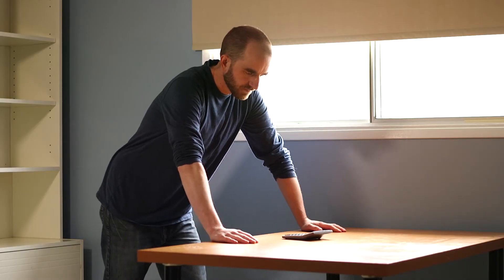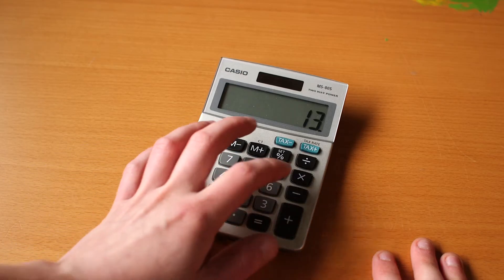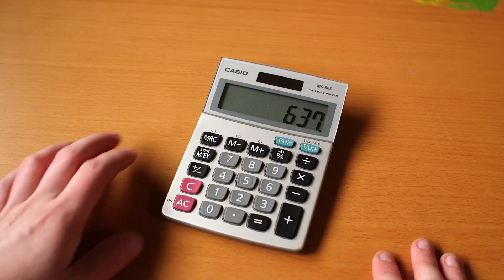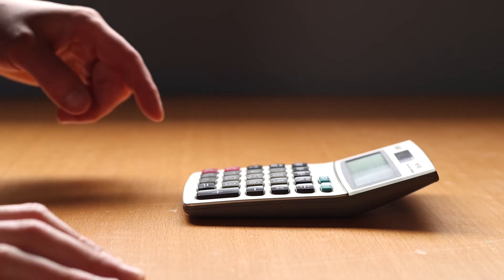Step five: run a test. If thirteen times forty-nine gives you six hundred and thirty-seven, that means the calculator is working correctly. Step six: press one.